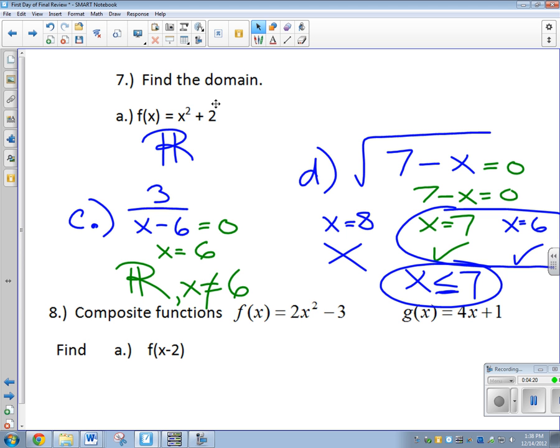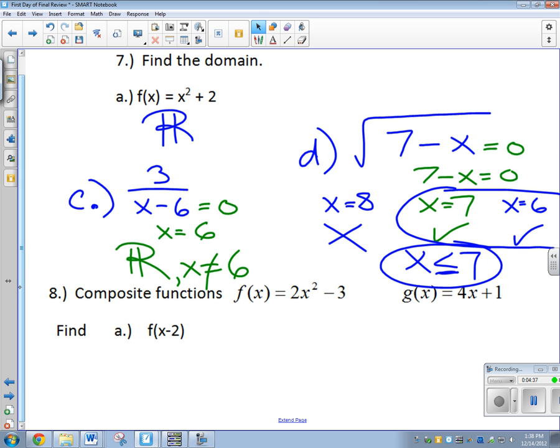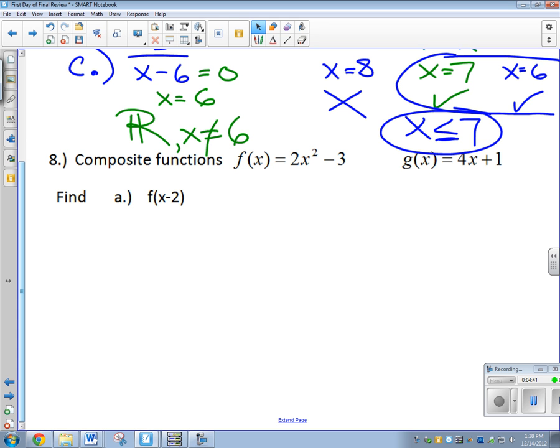Does that make sense how we did it? So if it's a fraction, set your denominator equal to zero and solve. And then it can't be that. If it's a square root, set it equal to zero and solve. And then try numbers above it and below it to see which way we want to go. Do we want to be bigger than that or less than that? Domain is probably the trickiest one. That's the one you're going to have to go back and think about a little bit.